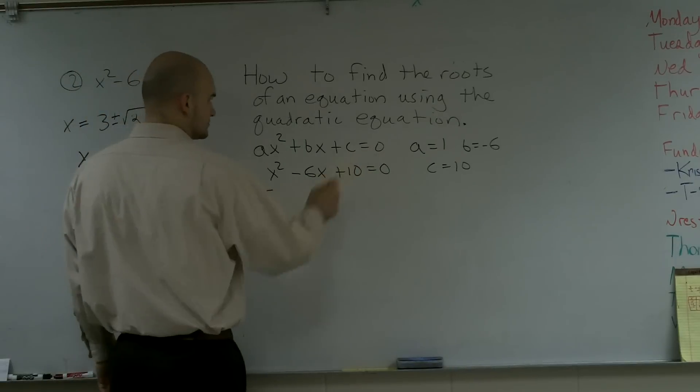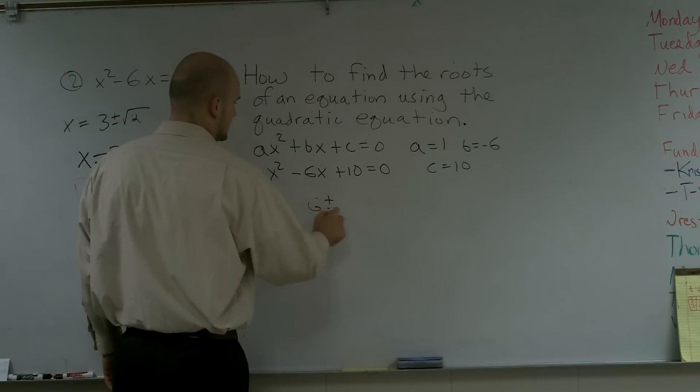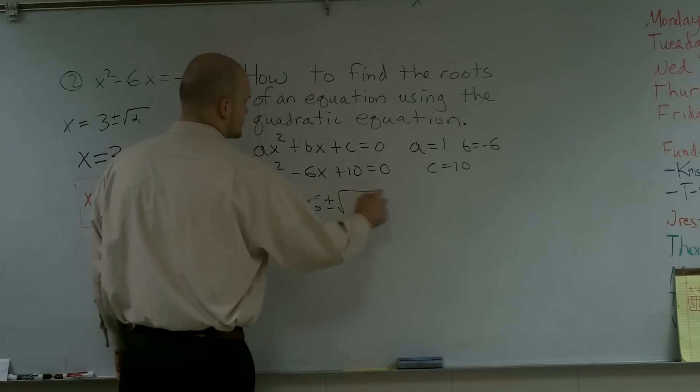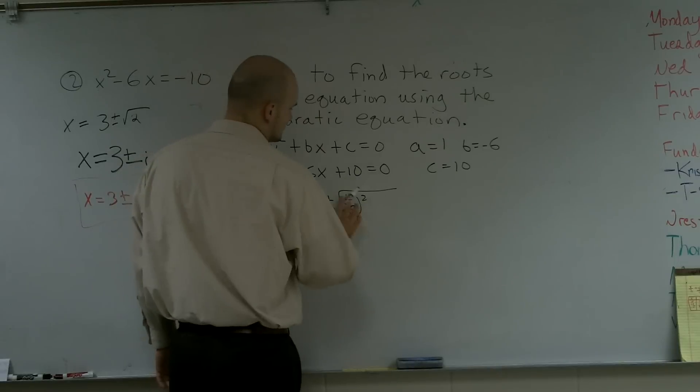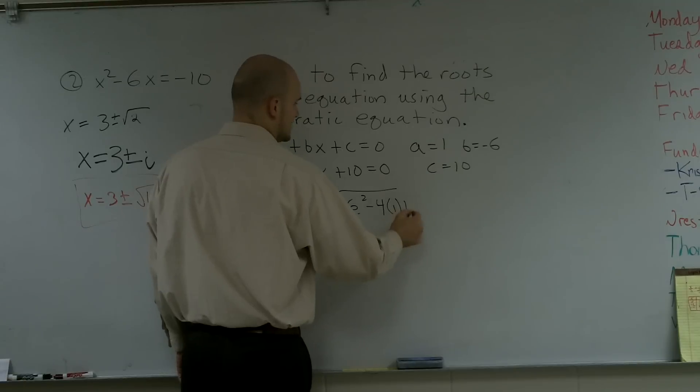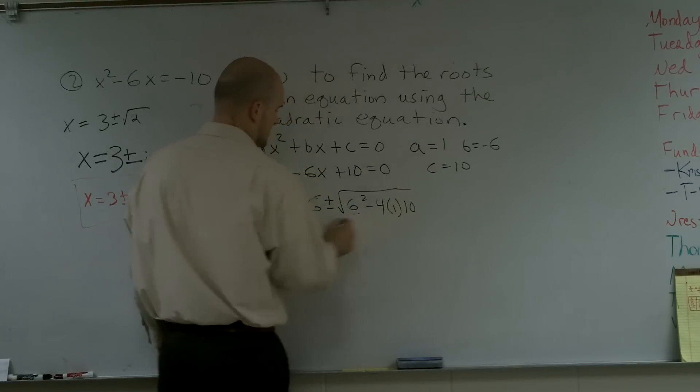So when doing that, I have 6 plus or minus the square root of 6 squared minus 4 times 1 times c, which is 10, all over 2 times 1.